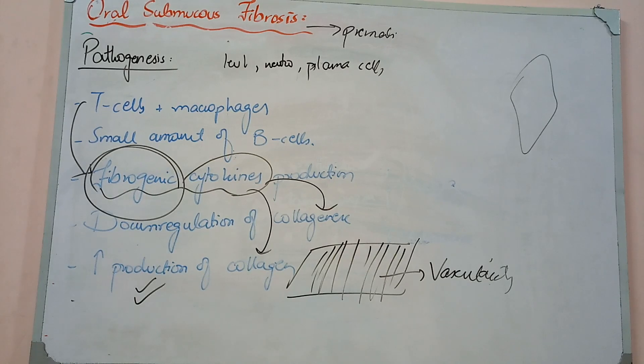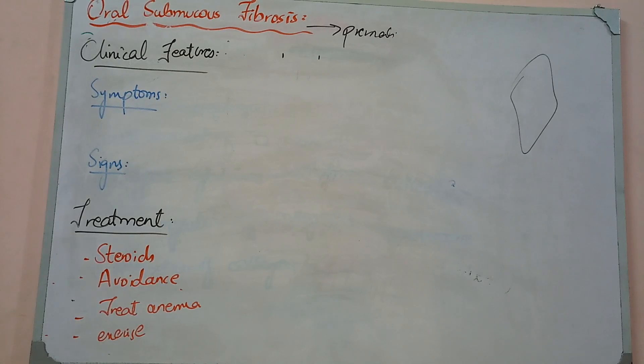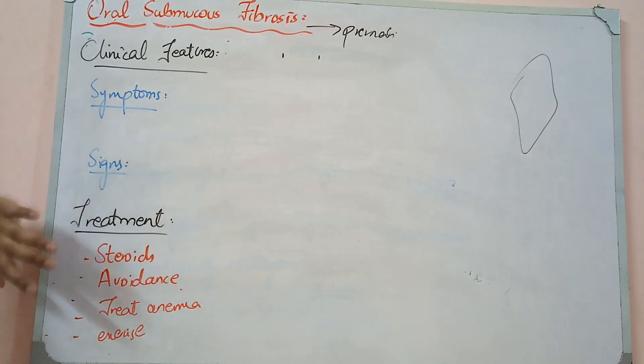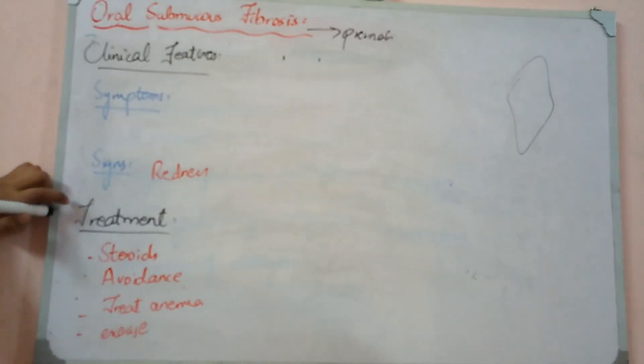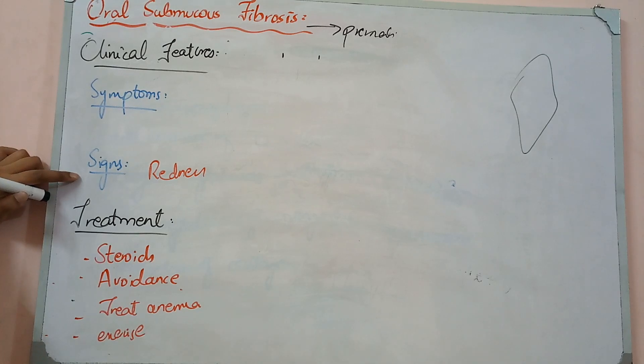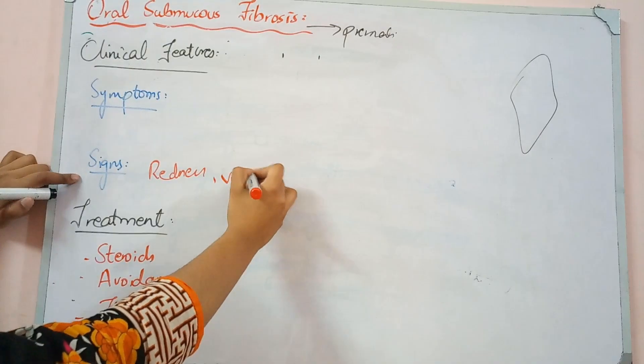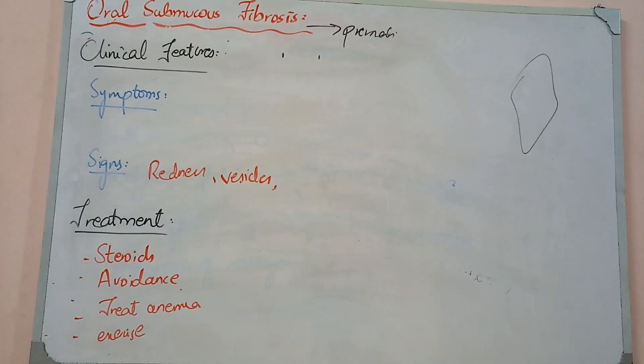Clinical features include signs and symptoms. Burning sensation in mouth, especially when eating spicy foods. Patients complain of fluid-filled vesicles. If this progresses, the patient complains that the mouth has problems, doesn't heal properly. These are the symptoms patients present. In initial stages, you see redness of the mucosa, vesicles that are fluid-filled and can rupture.